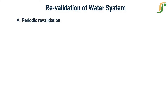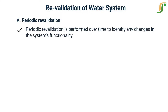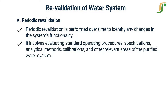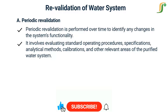Periodic revalidation is performed over time to identify any changes in the system's functionality. It involves evaluating standard operating procedures, specifications, analytical methods, calibrations, and other relevant areas of the purified water system.